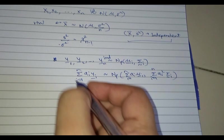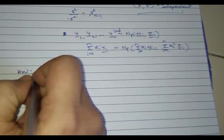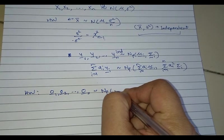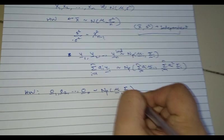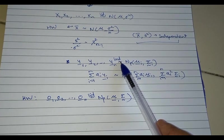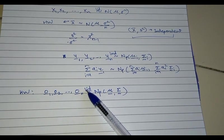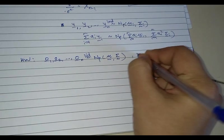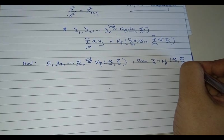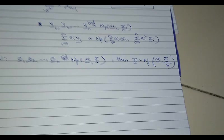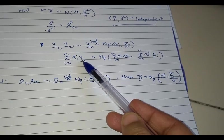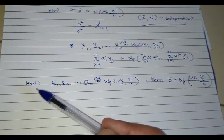Using this result, the homework is: if O1, O2, ..., On each come from p-variate normal with mean μ and variance Σ, prove that X-bar will have mean μ and variance Σ/N. As you can see, it is a direct application of the linear combination result, so this is straightforward.